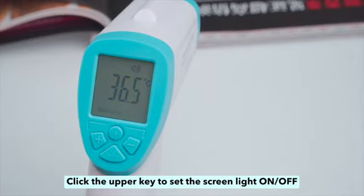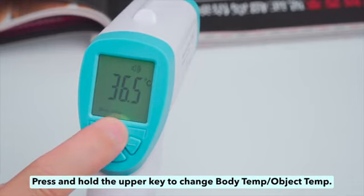Click the output key to set the screen light on or off. Press and hold the upper key to change between body temperature and object temperature mode.